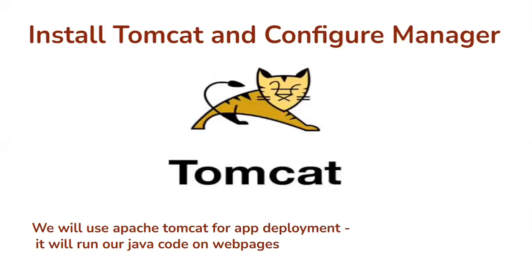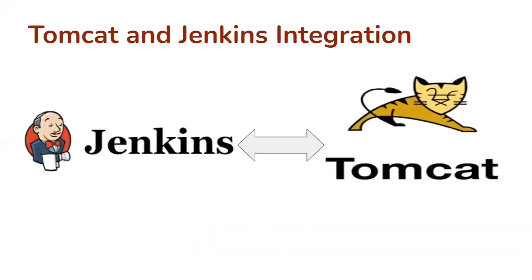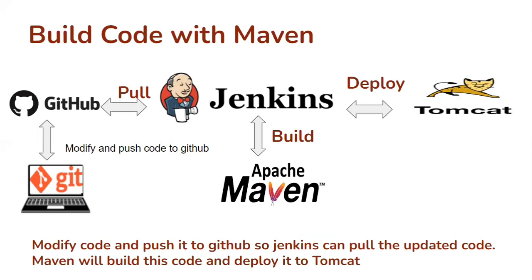We will install Tomcat and configure the manager app into Tomcat. It will be used for the Java code — we will view the Java code on web pages. After that we will integrate our Jenkins with the Tomcat server, so we can deploy the artifact to the Tomcat server and it shows a web page on the browser. Once Tomcat is successfully integrated with Jenkins, our pipeline will have Jenkins pulling code from GitHub, Apache Maven building the code and storing the artifact to the Jenkins server, then Jenkins deploying the artifact to Tomcat, and we can see our web pages on the Tomcat server.